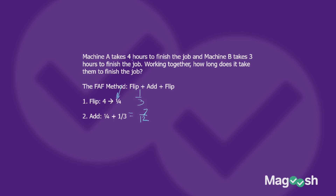Here's a quick method for adding unit fractions: when both fractions have one in the numerator, add the denominators together — four plus three is seven — put that in the numerator, and multiply the denominators for the denominator: four times three is twelve. So one-fourth plus one-third equals seven-twelfths. Now the final FAF step — flip again. The reciprocal of seven-twelfths is twelve-sevenths, which is one and five-sevenths of an hour. On a multiple choice test they would likely leave it as twelve-sevenths.